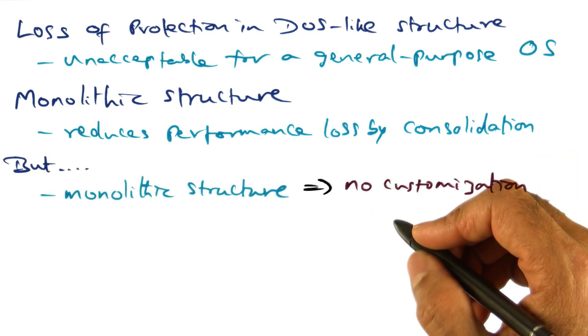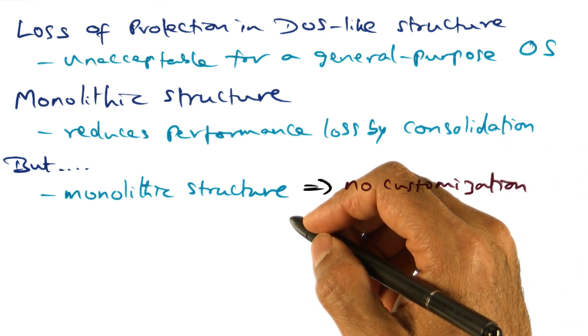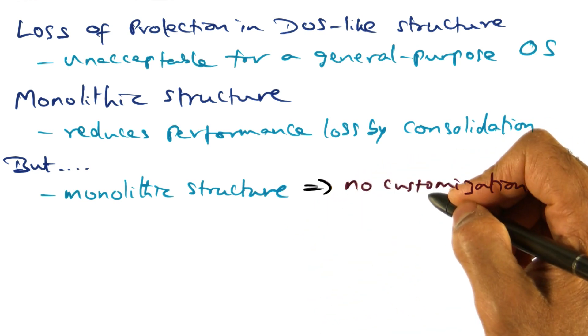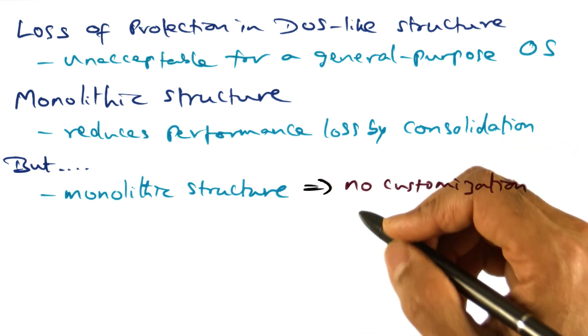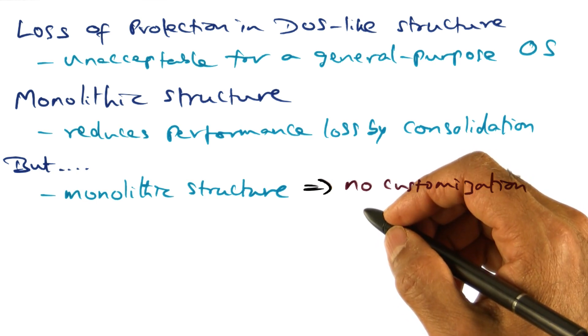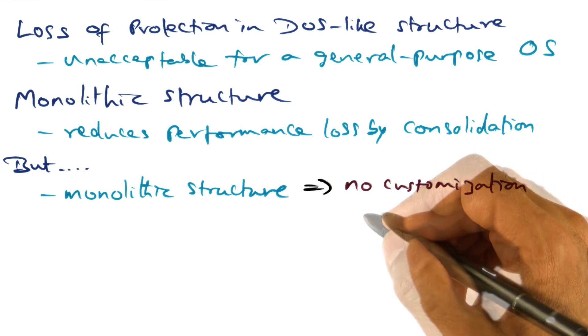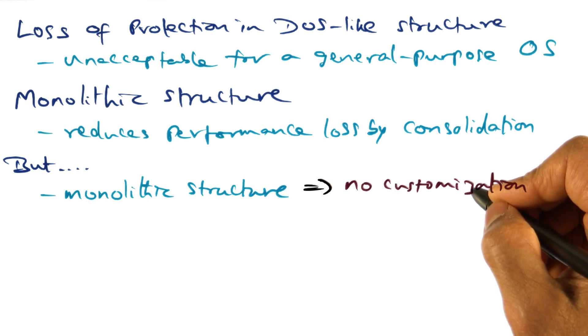But what is lost in the monolithic structure? That is the ability to customize the operating system service for different applications. This model of one-size-fits-all, so far as system service is concerned, with the monolithic structure shuts out the opportunity for customizing the operating system service for the needs of different applications.